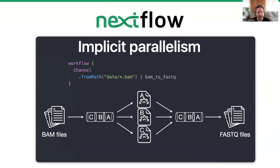As part of Nextflow, we also have implicit parallelism. With the workflow block and multiple files, using channels and processes, you can divide work and have processes run in parallel. This is really powerful because you can run the same process as multiple tasks at the same time, which can really speed up how your pipeline runs. You can also distribute your pipeline and resources across a cluster or the cloud quickly and easily.